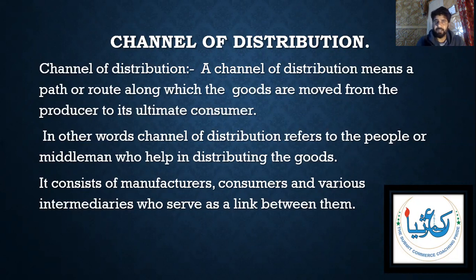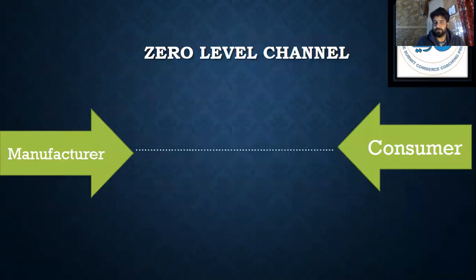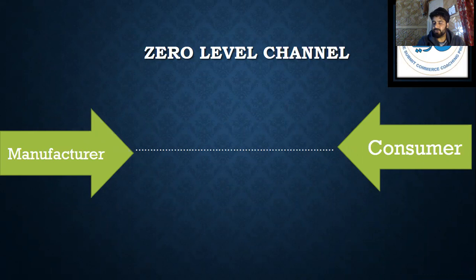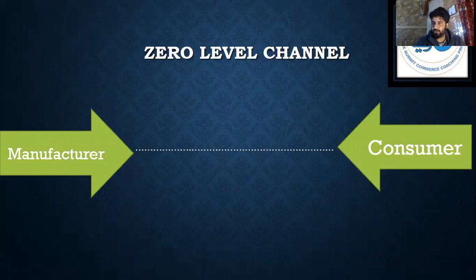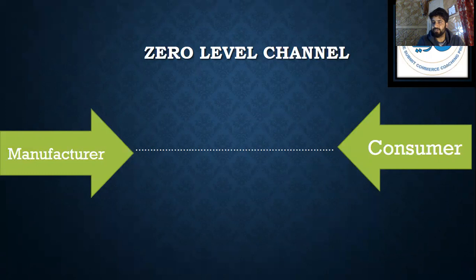The type of channel of distribution depends upon the type of good. For example, if there is a manufacturer and a consumer with no agent in between — the manufacturer directly sells goods to the consumer — this is called a zero level channel. The manufacturer does not send to an agent, wholesaler, or retailer; they directly sell to the consumer. This is also called direct marketing.